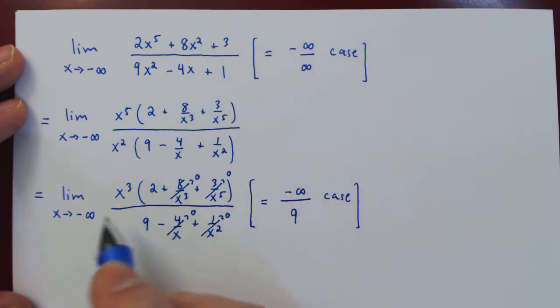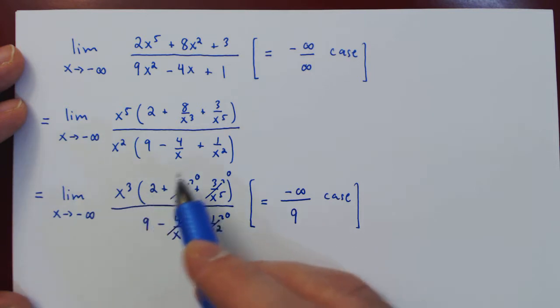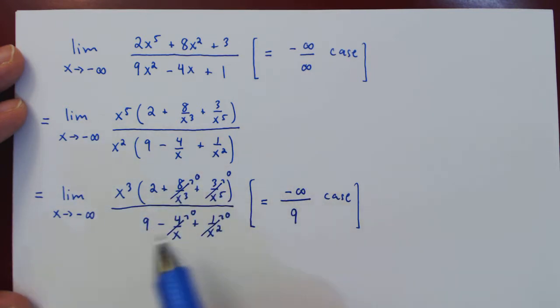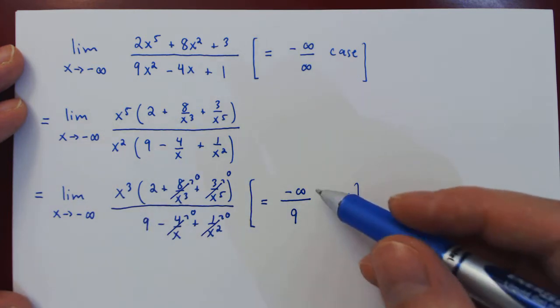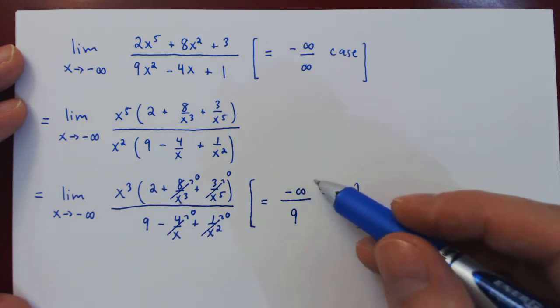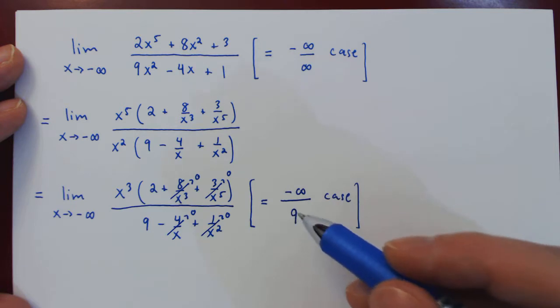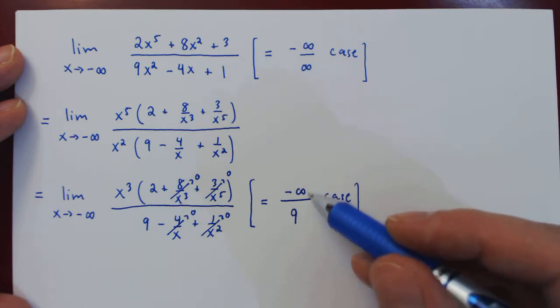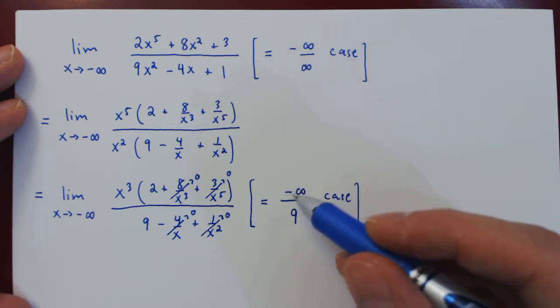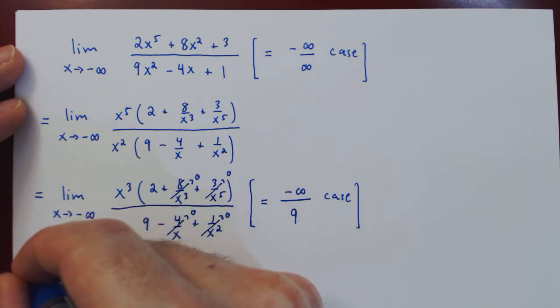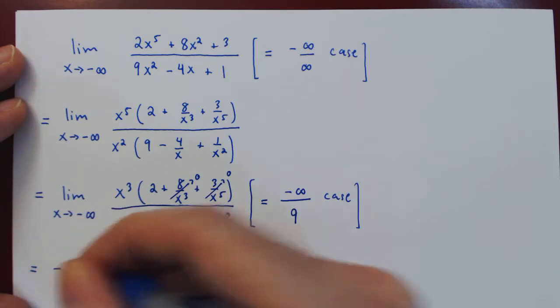So we have a fraction where the numerator gets larger and larger and negative, and the denominator gets closer and closer to 9. Well, if you have something larger and larger divided by 9, it also gets larger and larger, and so the answer to our limit is negative infinity.